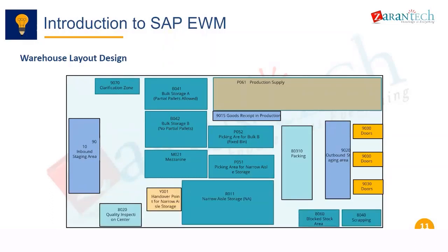EWM provides better traceability and helps perform inbound and outbound processes better, serving customers better. EWM has several functionalities that help keep stock at the right location and optimize inventory — so we don't overstore or understore. EWM also helps with time management, ensuring products are supplied to the customer at the right time before they get loaded and dispatched onto the truck or trailer. EWM also has features like voice picking and integration with RFIDs.